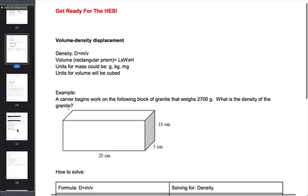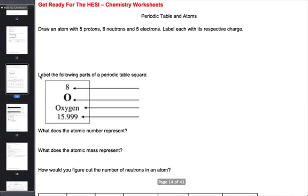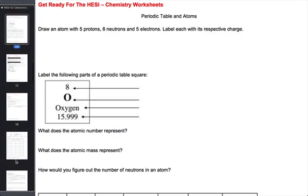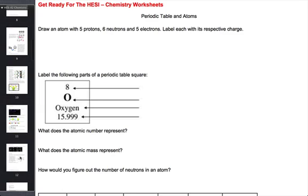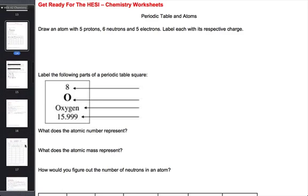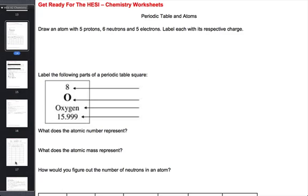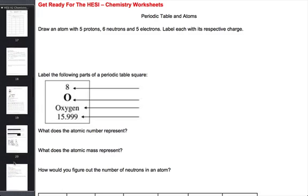And then let's scroll over to this. So we also have worksheets in this study guide. We have several worksheets. Here you'll see a list of some other worksheets. So first you have the chapter summaries, the main topics. Then we give you some worksheets to practice on. And this particular worksheet is on periodic table and atoms.